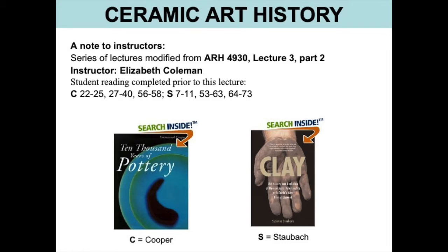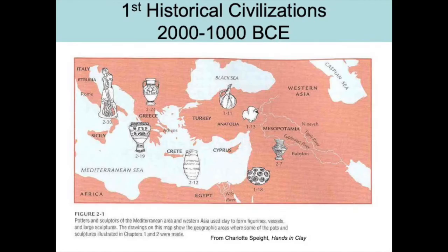We're going to get started today by looking back at this map from Charlotte Spite's book, Hands in Clay, showing us the Mediterranean era and area and also Western Asia from the period roughly from 2500 up to 1000 BCE. The first part of this lecture focused on Egyptian and Minoan ceramics. Today we're going to continue the lecture starting with Mycenaean ceramics, which is image 219, right over Greece.